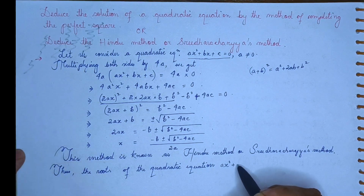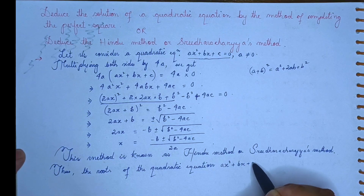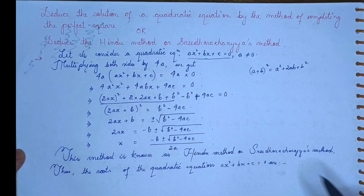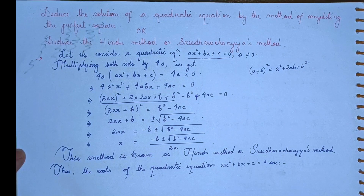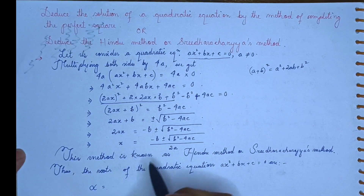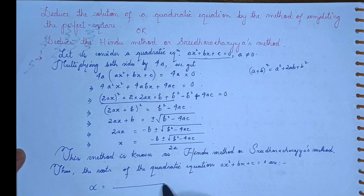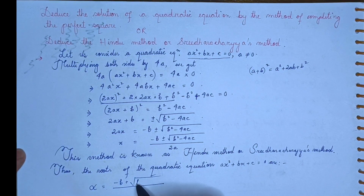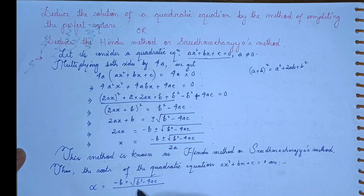For the quadratic equation x squared plus bx plus c equal to zero, the root alpha is: minus b plus root over b squared minus 4ac, divided by twice a.